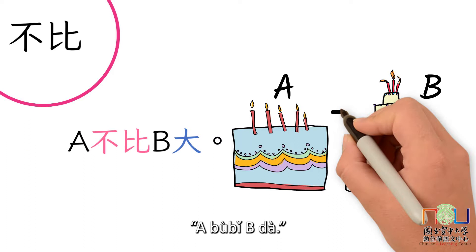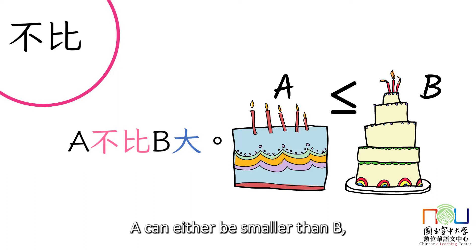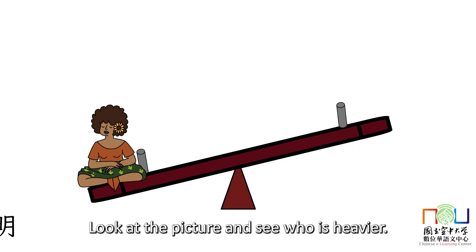Then, how about 不比? A 不比 B 大. This sentence has two possible meanings. A can either be smaller than B, or the same size as B. Let's look at another example.